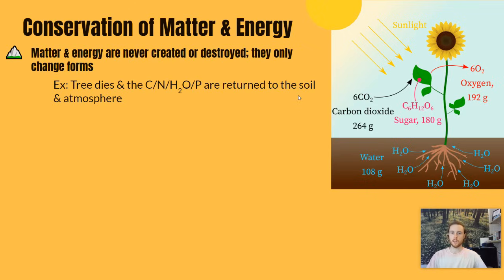The carbon, nitrogen, water, and phosphorus within the tree were all returned to either the soil or the atmosphere, or went into the bodies of decomposers. We did not actually lose any of the matter — it looks different, but it still exists and is just transformed into a different state.